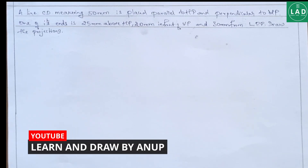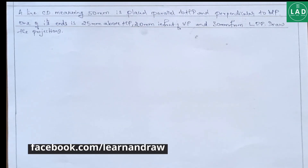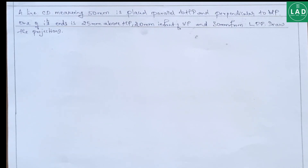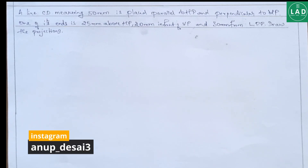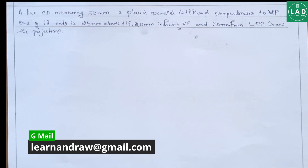In this example, we know that the line is parallel to HP and perpendicular to VP. Since it is parallel to HP, the true length of the line is seen on the top view, and on the front view only a point can be seen. Similarly, on the right side view — that is, seen in the left profile plane — the true length of the line can also be seen.